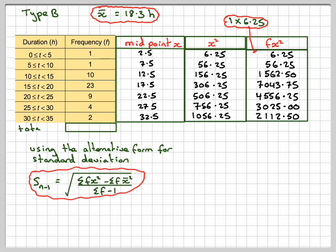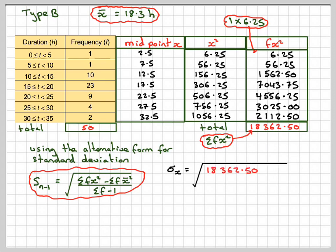We need to sum those. The sum of the frequency is 50, and the sum of this is 18,362.50. So the unbiased estimate will be 18,362.50 minus 50 times 18.3, divided by 50 take away one. That gives me 1618 over 49, which is 5.746, or 5.75 to three significant figures.